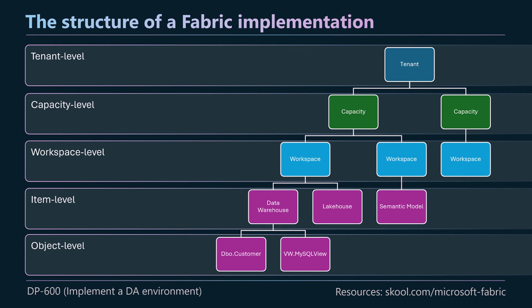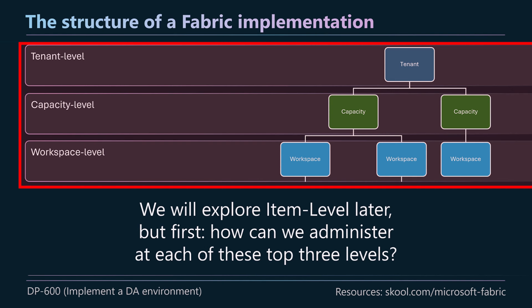When administering Fabric, we need to be aware of these different levels because administration happens in a different way at each one. In the last lesson we looked at the tenant level admin settings, mostly things in the admin portal under tenant settings. Today we'll explore item level a bit later on, but first let's look at how we can administer each of the three top levels.